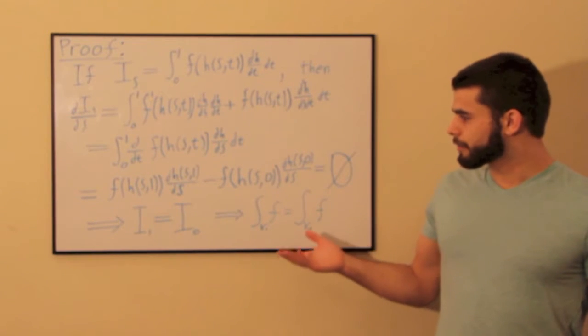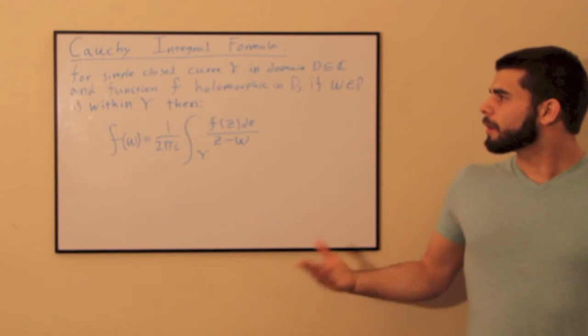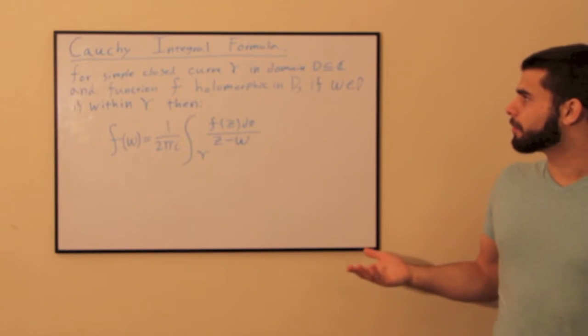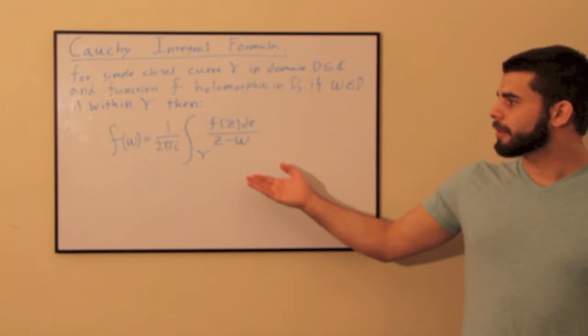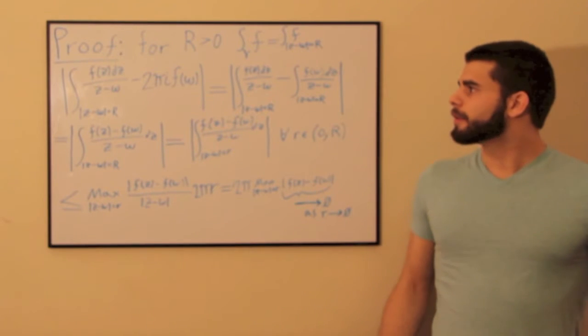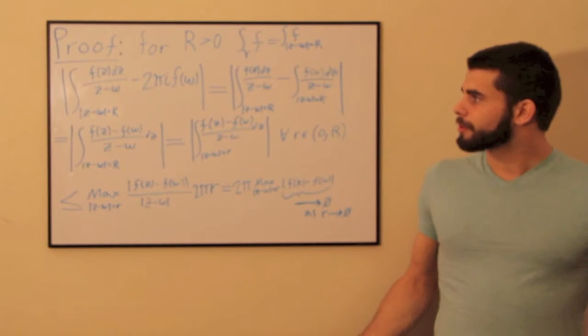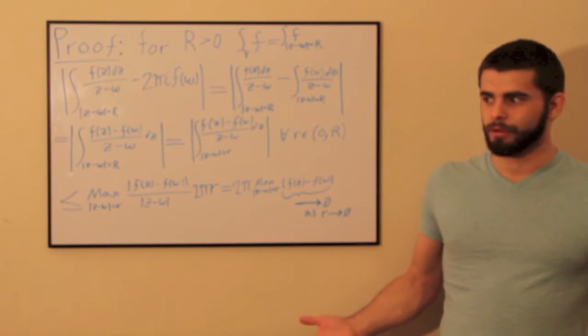This brings us to the Cauchy integral formula, which states that for a simple closed curve gamma and a complex domain D and a holomorphic function F, this equation holds. This theorem is proved by using the Fundamental Theorem of Calculus and Cauchy's Theorem to show that the difference of the two sides of the equation are equal to zero, and therefore the two sides are, in fact, equivalent.